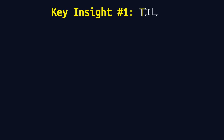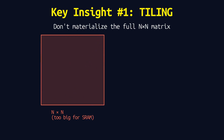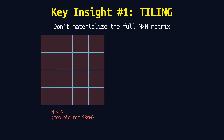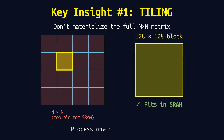Key insight number 1: Tiling. Instead of materializing the full N-by-N attention matrix — which doesn't fit in fast SRAM — we break it into small blocks, say 128 by 128 elements. That's small enough to fit entirely in SRAM. Now we process one tile at a time: load a block of Q, K, and V, compute attention for that block entirely in fast memory, then move to the next block. We never store the full attention matrix. We trade a bit of redundant computation for massive savings in memory access.